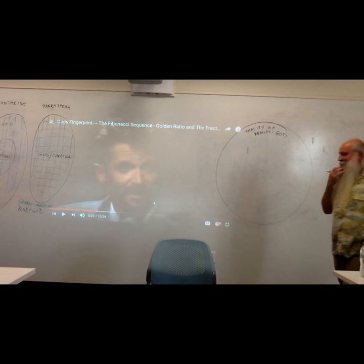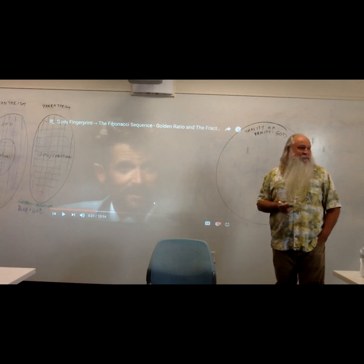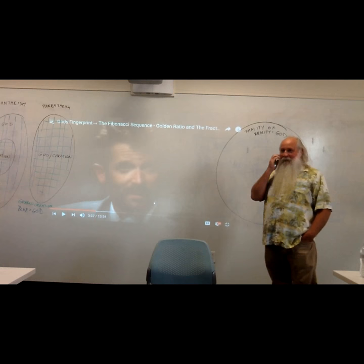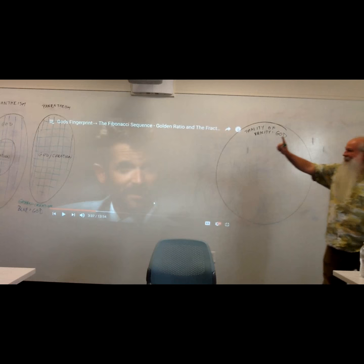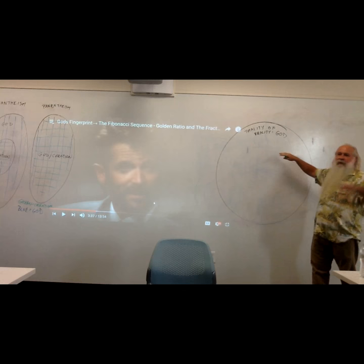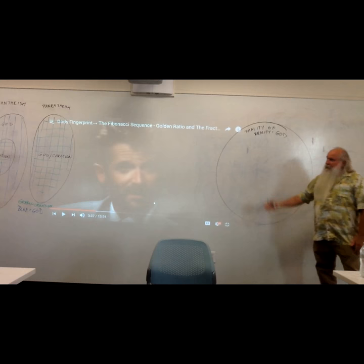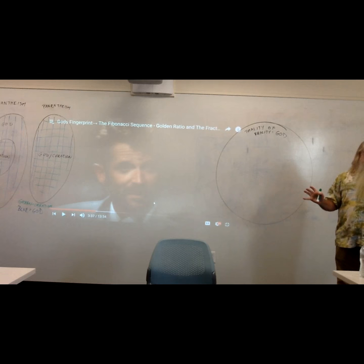I found an old journal of mine as I was preparing for this, and the stuff I wrote — it's much older than anyone in this room. This circle represents the totality of reality, and there's nothing outside of this circle. It's just a metaphor, a symbol, to help you get into the thoughts we're trying to accomplish here. I've included three graphs that explain major worldviews on how people see God's relationship to nature or creation.